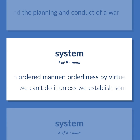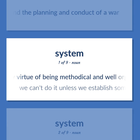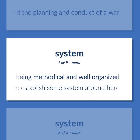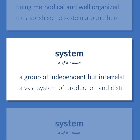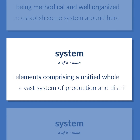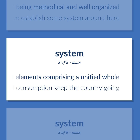System: An ordered manner; orderliness by virtue of being methodical and well organized. We can't do it unless we establish some system around here. A group of independent but interrelated elements comprising a unified whole. A vast system of production and distribution and consumption keep the country going.